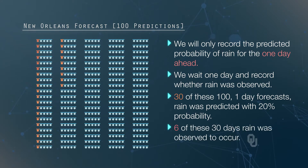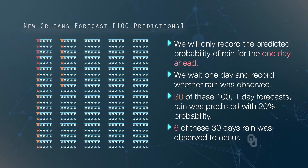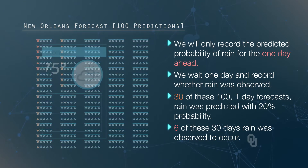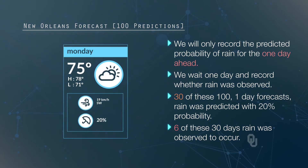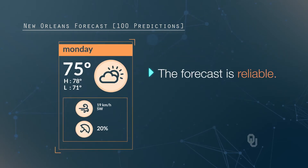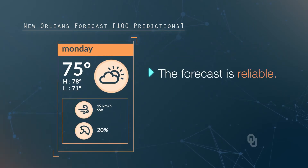Suppose for six of those 30 days, rain was observed to occur. The forecast for a 20% chance of rain did exactly what was hoped for. The forecast is reliable.